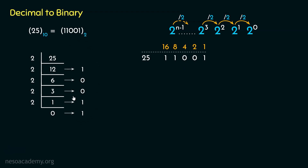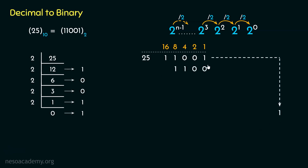Let's now understand why we retain the remainders in reverse order, that is bottom to top. Bitwise right shift is division by 2. If we shift the bit stream 11001, the least significant bit 1 will be moved out, and the entire bit stream will now become 1100. What is the decimal value of 1100? Observe the ones: 8 plus 4, that is 12. If we shift this again, the least significant bit 0 will be moved out, and the bit stream will become 110.